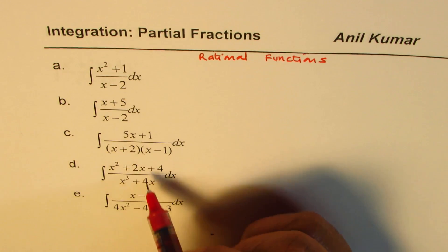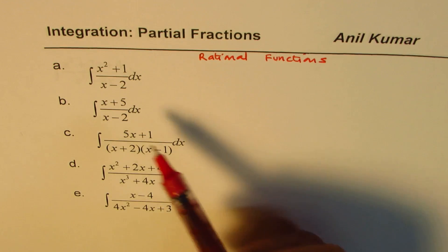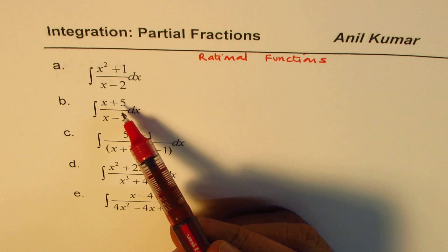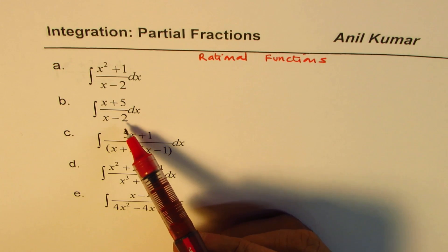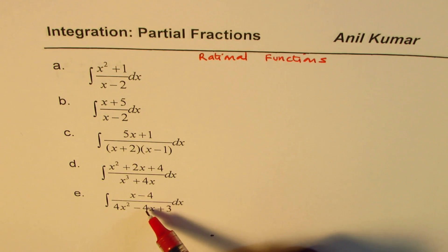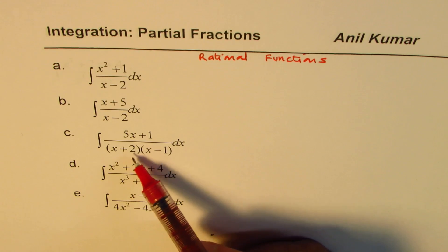Now, we have different types of examples here. In the first two, you find that the degree of numerator is not less than the degree of denominator. In these three examples, degree of denominator is higher.